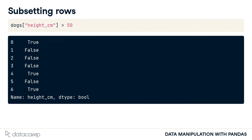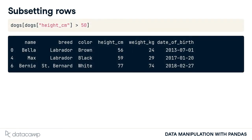There are lots of different ways to subset rows. The most common way is by creating a logical condition to filter against. For example, let's find all the dogs whose height is greater than 50 centimetres. Now we have a true or false value for every row. We can use the logical condition inside square brackets to subset the rows we're interested in, getting all of the dogs taller than 50 centimetres.